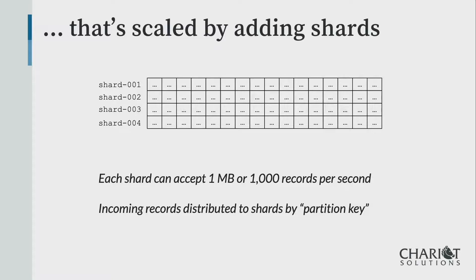Incoming records get distributed to a given shard based on a partition key. You can use a random partition key, which puts them into whatever shard fits, or you could use something like the device ID. Using device ID is nice because all messages for that device end up in the same shard — so if you want to look for a specific device and know what shard it belongs to, you can read just that shard instead of the entire stream.